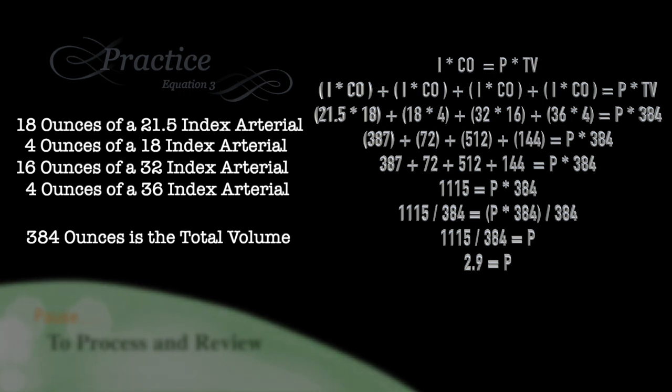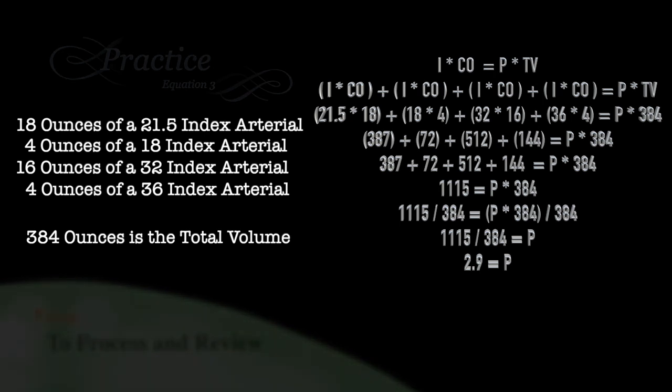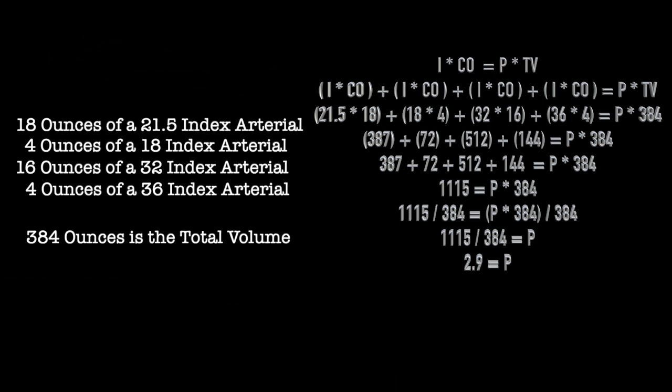Well, 1,115 divided by 384 gives us 2.9. 2.9 is the total percentage of formalin in the tank, P.